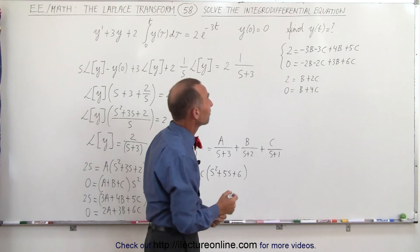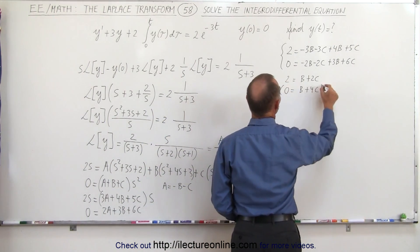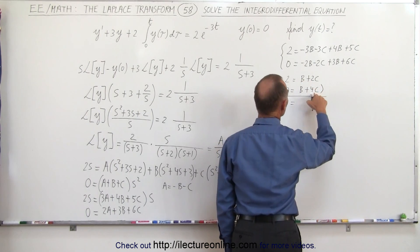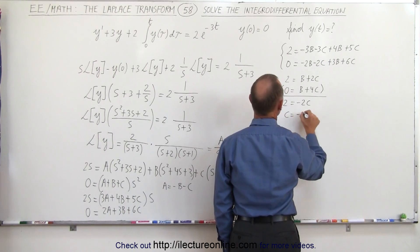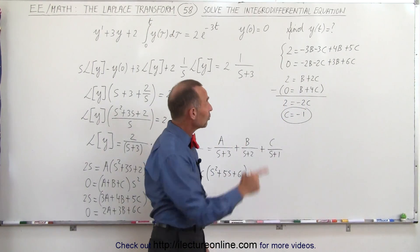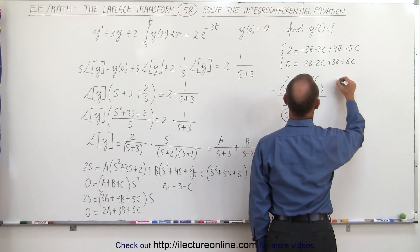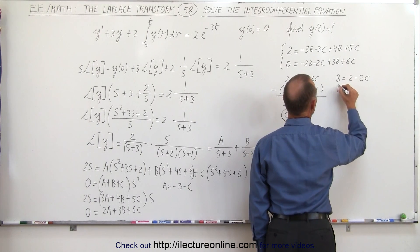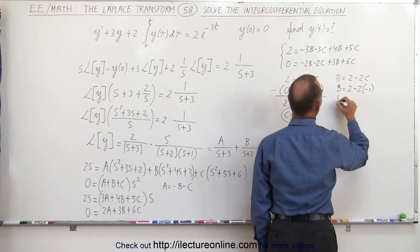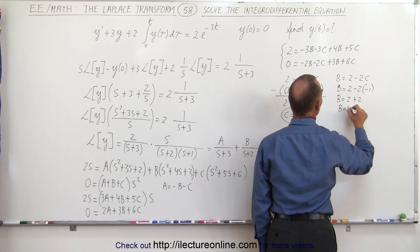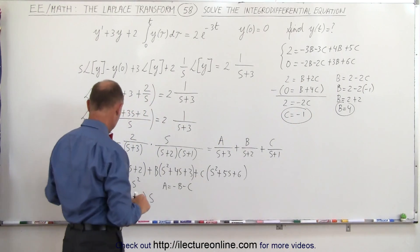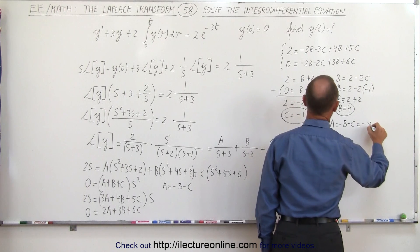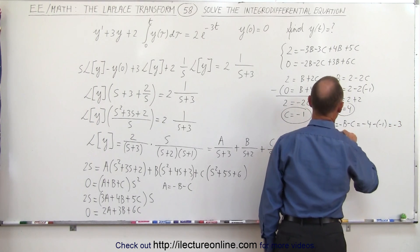Solving these two equations simultaneously by subtracting: 2 minus 0 is 2, B minus B is 0, and 2C minus 4C is minus 2C, so C equals minus 1. Substituting back, B equals 2 minus 2C equals 2 plus 2 equals 4. And A equals minus B minus C equals minus 4 minus (minus 1) equals minus 3.